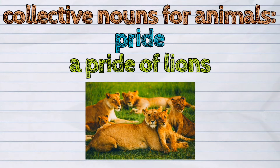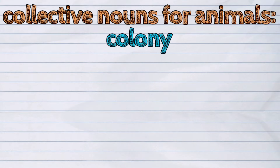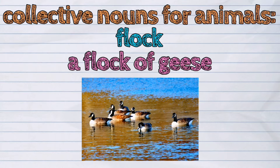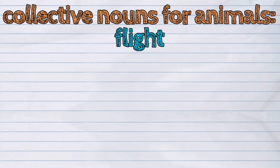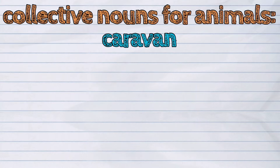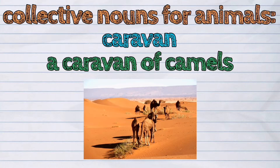More examples: Pride — a pride of lions. Colony — a colony of ants. Flock — a flock of geese. Flight — a flight of birds. Caravan — a caravan of camels.